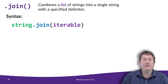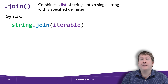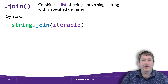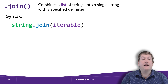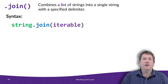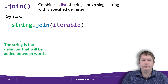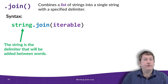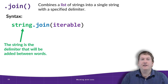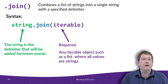Now we're going to talk about the syntax for the join method. Recall that this combines lists of strings into a single string — it's sort of the opposite of split. The syntax is 'string.join(iterable)', where the string at the beginning is the delimiter that goes between each value in the sequence. The iterable is some sort of sequence it can loop over, and the values in it have to be something that can be converted into a string.